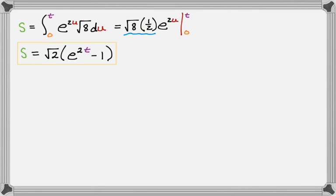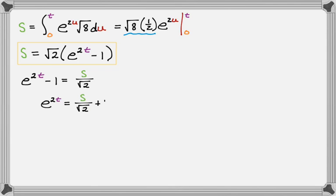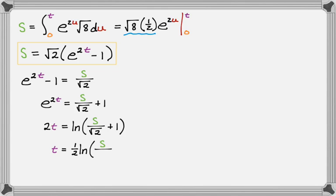We're halfway there. Now our job is to take that expression and solve it for t. First, divide both sides by radical two. Then add one to both sides. Take the natural log of both sides to bring down the exponent. Then divide both sides by two. So t equals one half times the natural log of the quantity s over radical two, plus one.